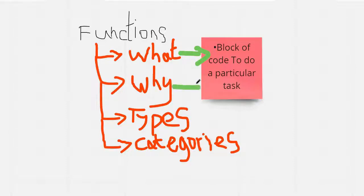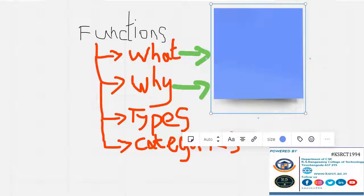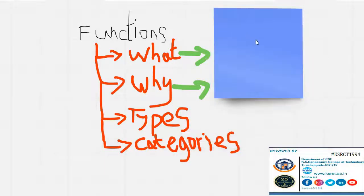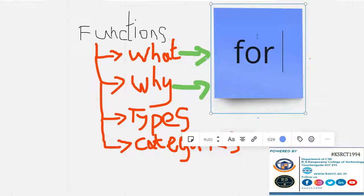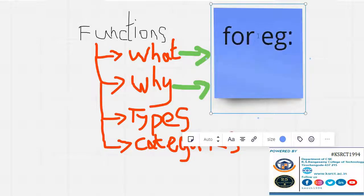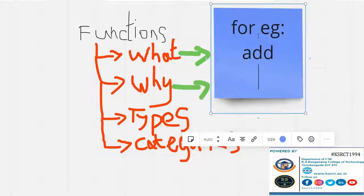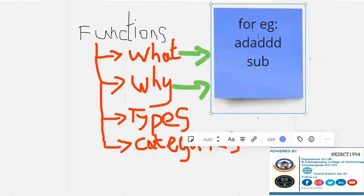So why do we move towards functions? What is the need? For example, if I need to perform tasks like adding two numbers, then subtracting two numbers, then adding again, then multiplying, then subtracting — the operations are not in an arranged or repetitive manner.